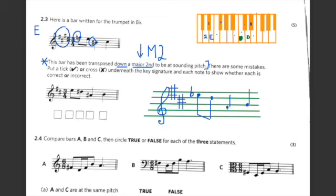And we also raise it by a semitone. So we have an A, we raise it by a semitone. It's an A sharp. So that there is the correct transposition.